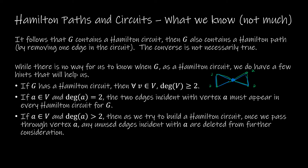The third condition: if vertex A has degree greater than two, then as we start to build our Hamilton cycle, once we pass through the vertex we have to get rid of any unused edges connected to it. That's why we can't have a Hamilton cycle in certain cases — because we can't end up back where we started.